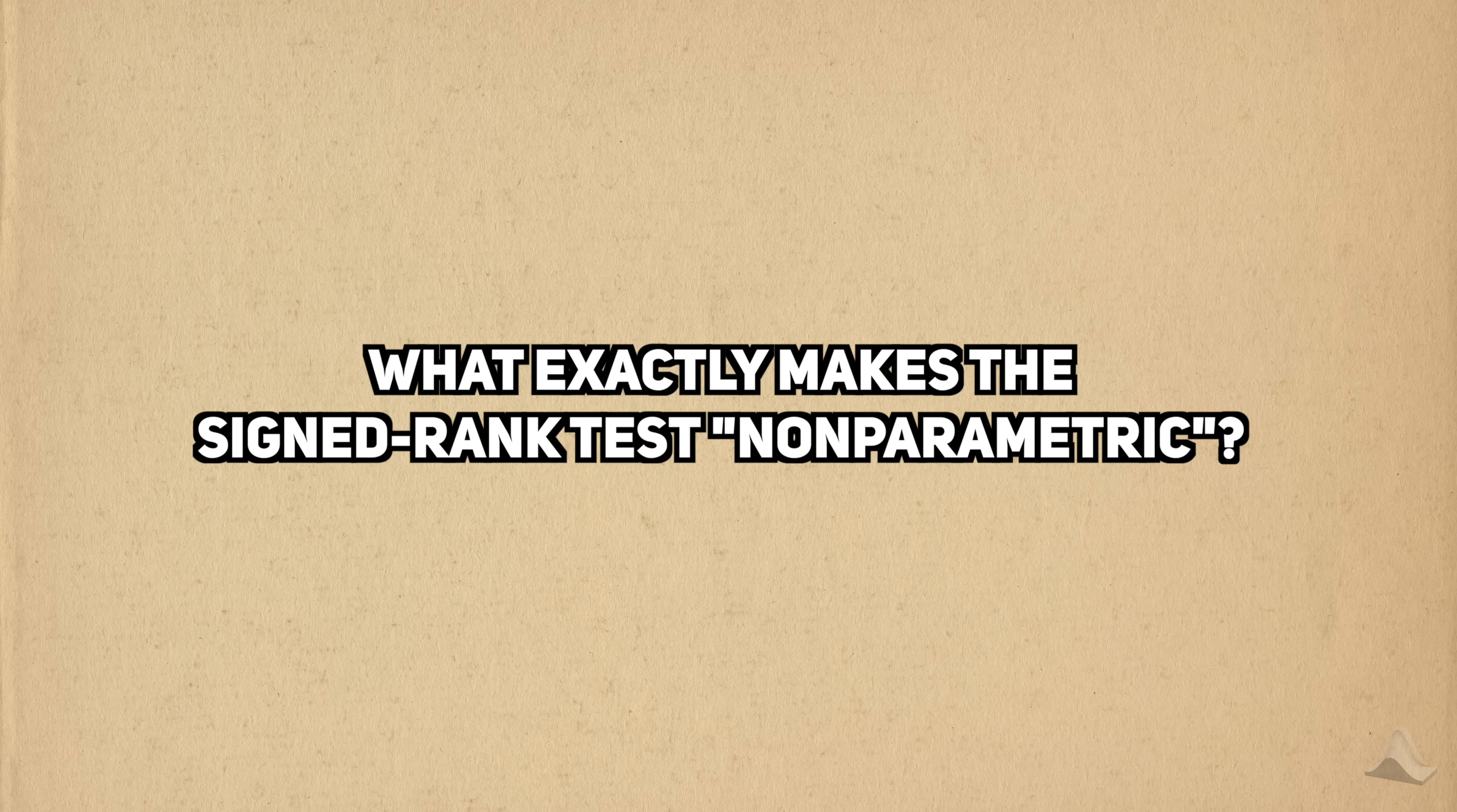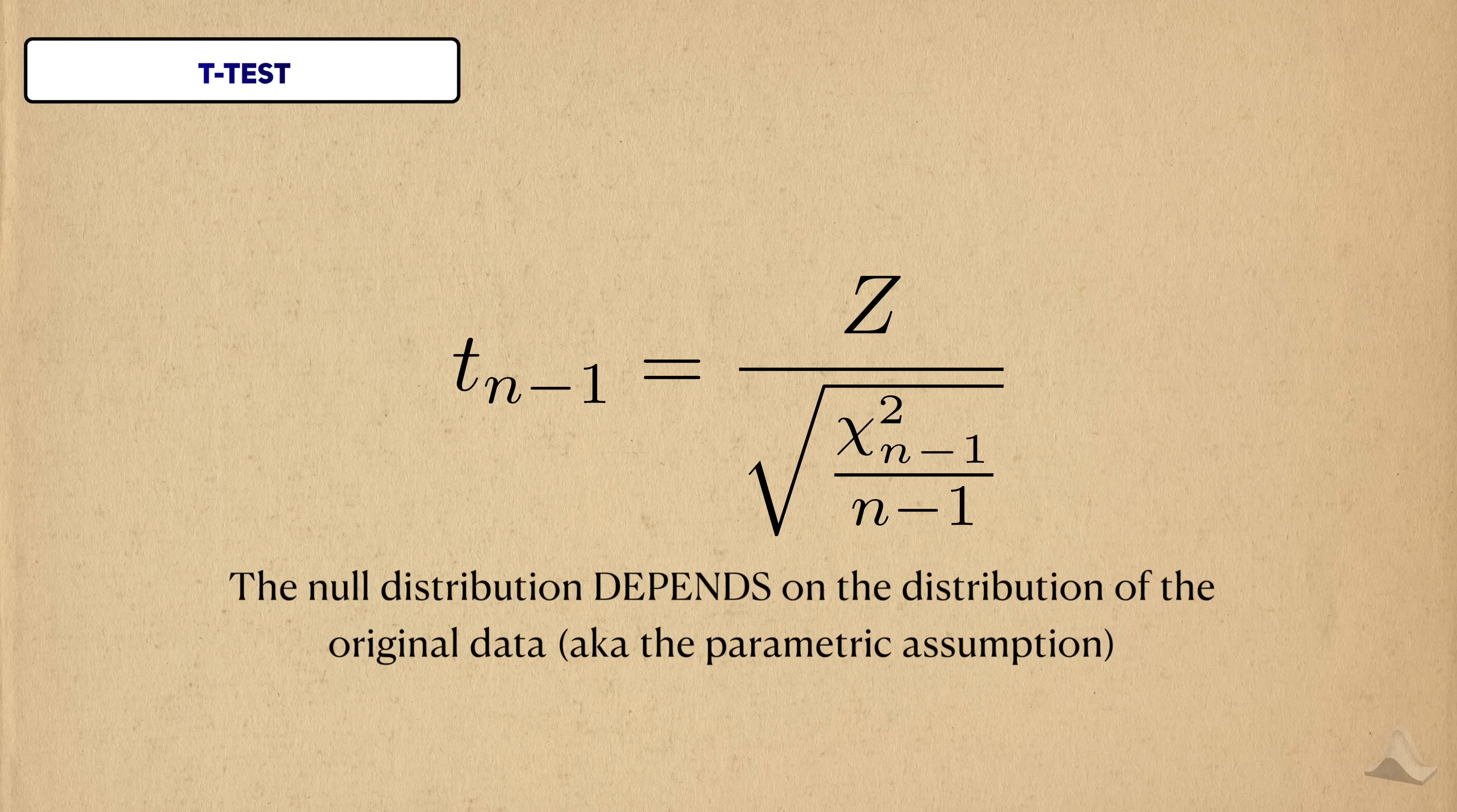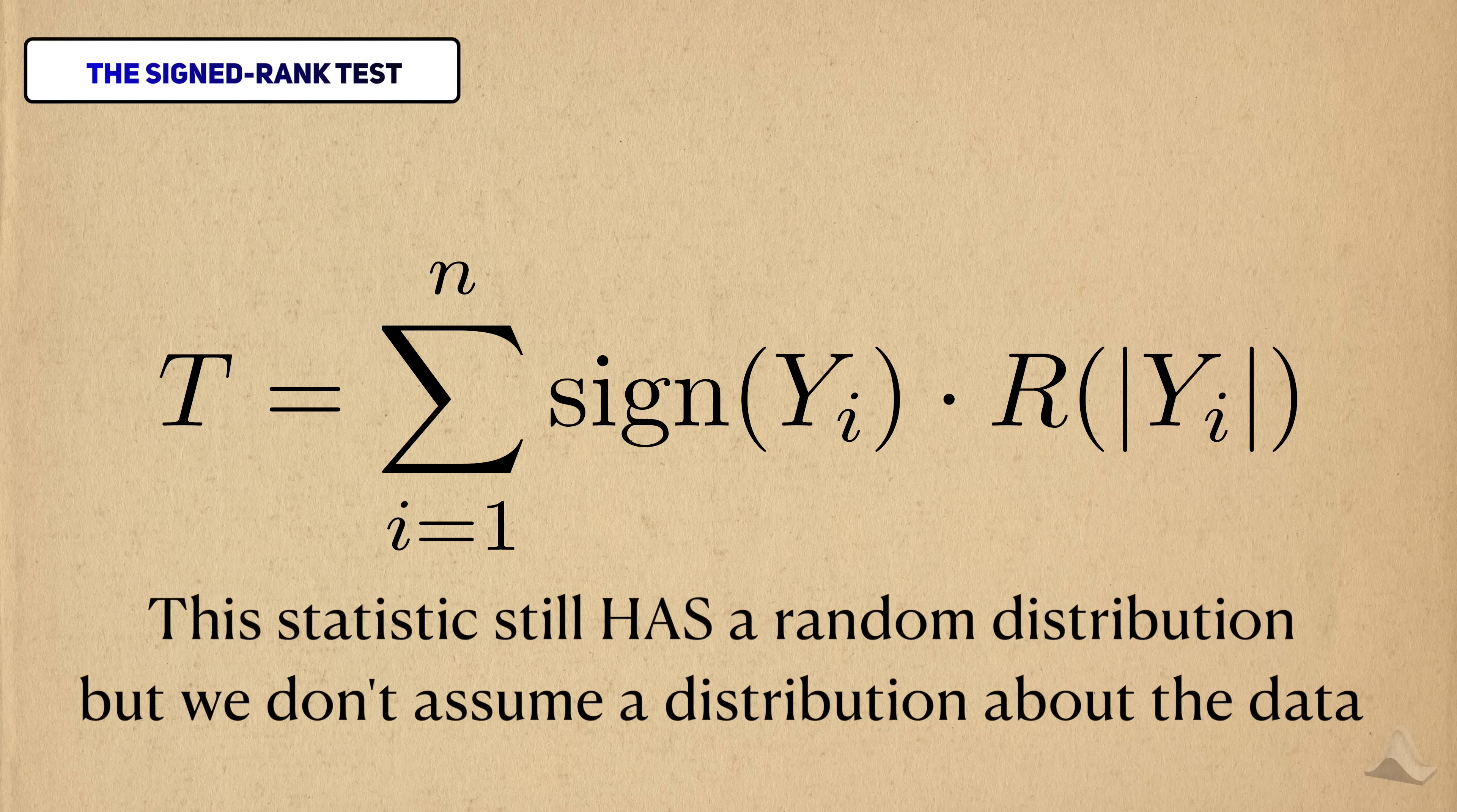So why is the signed rank test a non-parametric test? To understand this, it's helpful to look at the statistic for the t-test. It's well known that the null distribution for this statistic is a t-distribution with n minus 1 degrees of freedom. The null distribution of the t-test depends on the fact that the distribution of the sample mean is normal. You see, you get a t-distribution when you divide a standard normal random variable by this function of a chi-squared distribution. And this is what happens when you need to estimate the population variance. In other words, the null distribution depends on the original distribution of the data. But in the signed rank test, this isn't the case. Rather than using the data directly, this test uses a transformed version of the data. And even though we didn't see what it was, the distribution of this statistic doesn't depend on the distribution of the original data. Because of this, the signed rank statistic is said to be distribution-free. This phrase can be a little confusing because it still has a distribution, but it's more so a reference to the fact that we don't need to assume a distribution on the original data.